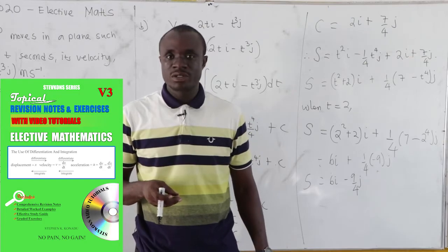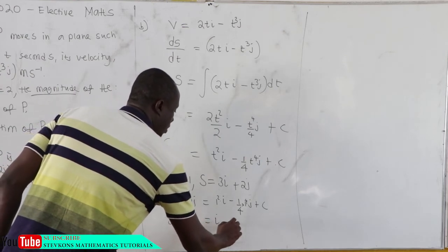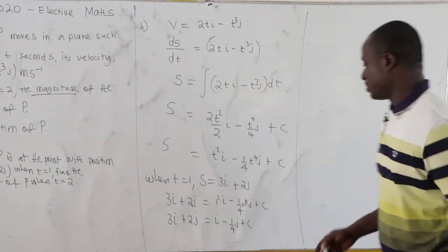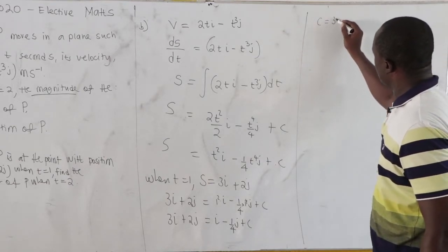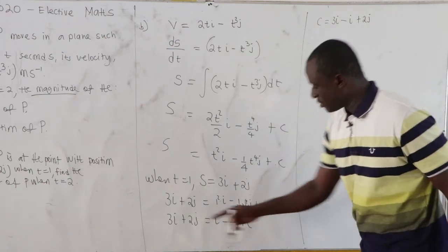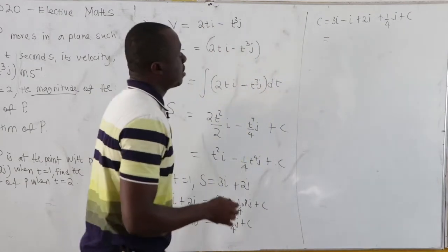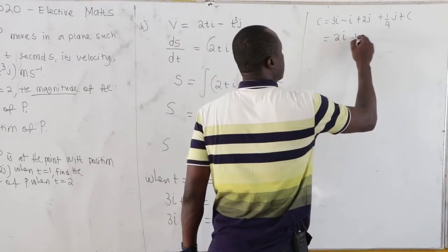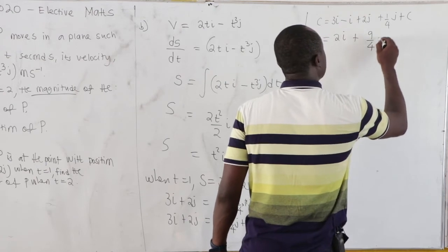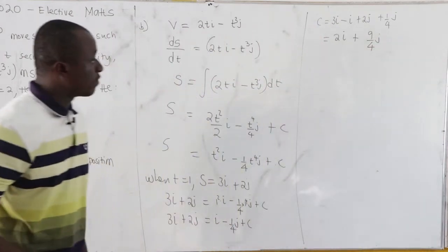Reworking the constant of integration: 3i plus 2j equals i minus (1/4)j plus C. So C equals 3i minus i plus 2j plus (1/4)j, which is 2i. Using LCM 4: 2j plus (1/4)j gives (8 + 1)/4 j, so C equals 2i plus 9/4 j.